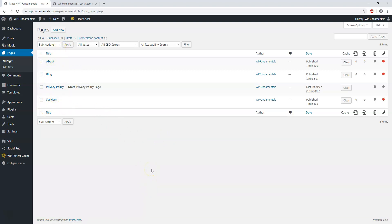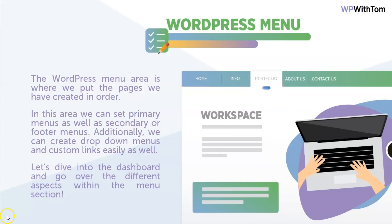The WordPress menu area is where we put the pages we've created in order. In this area we can set primary menus as well as secondary or footer menus. Additionally, we can create drop-down menus and custom links easily as well. Let's dive into the dashboard to go over the different aspects within the menu section.